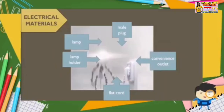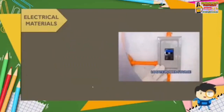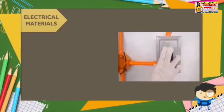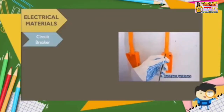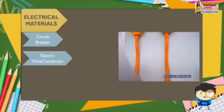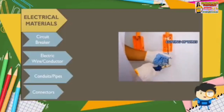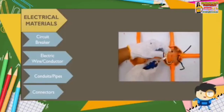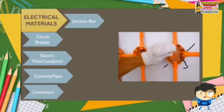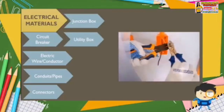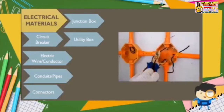We have a video presentation where you can see the function and use of different electrical materials. First shown in the video is the circuit breaker. Next is the electric wire or conductor being inserted in conduits or pipes. The conduits or pipes are held by connectors. You can also see the junction box in octagonal shape and utility box in rectangular shape.